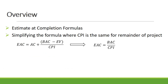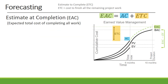We will be discussing the Estimate at Completion formulas, and then simplifying the formula where the CPI is the same for the remainder of the project, in order to understand the formula: Estimate at Completion equals Budget at Completion divided by CPI. The Estimate at Completion is our expected total cost of completing all the work on our project — that is our Actual Cost at a given time plus the Estimate to Complete, which covers the remainder of the project work.